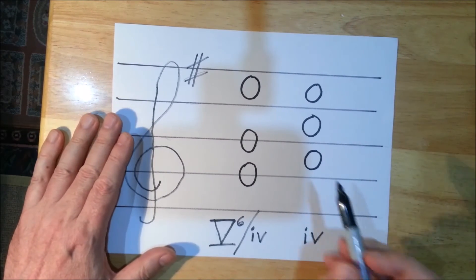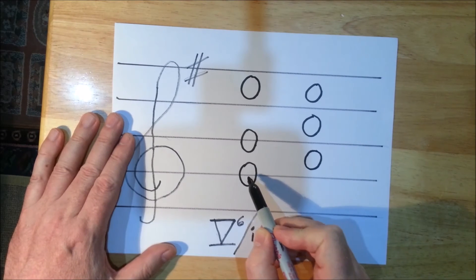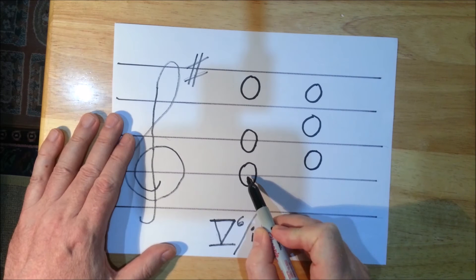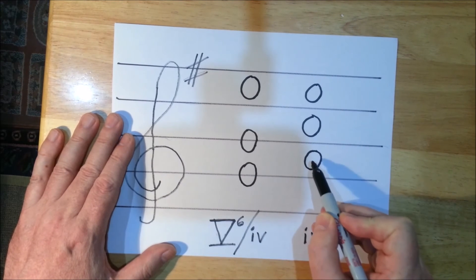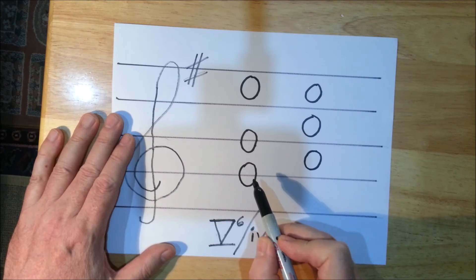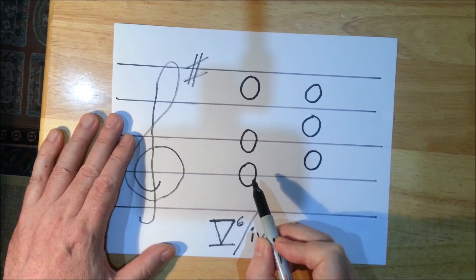Now with a secondary dominant this chord has to be in the key of this chord. So this chord here has to be in the key of A minor. When you're making chords in a minor key it's very important to remember that you have to use harmonic minor.